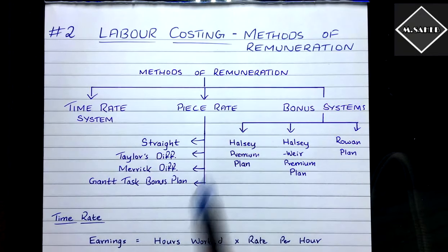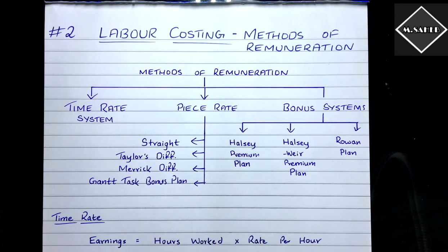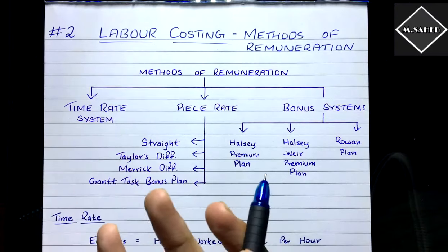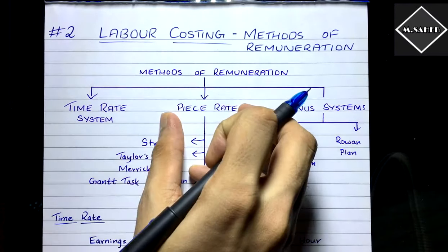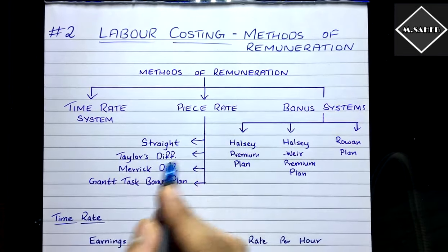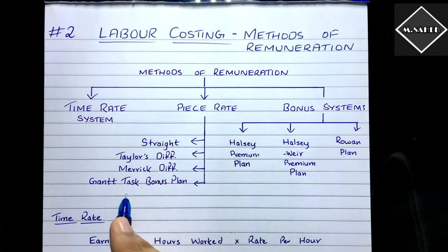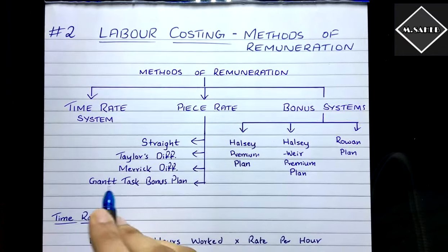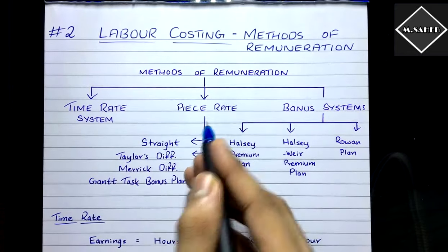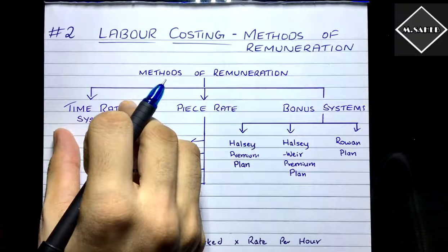We have three different methods of remuneration: the time rate system, the piece rate system, and bonus systems. Going deeper, under piece rate we have the straight piece rate system, Taylor's differential piece rate system, Merrick's differential piece rate system, and the Gantt task bonus plan. The Gantt task bonus plan is not entirely a piece rate system — it is a combination of piece rate and time rate.